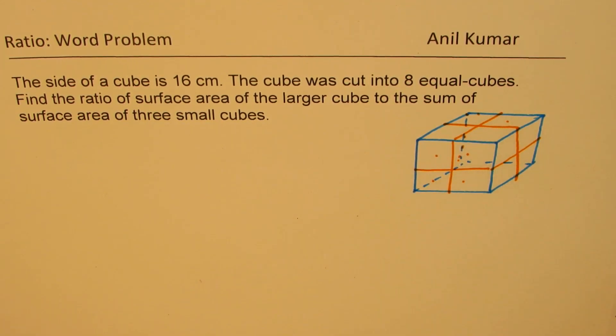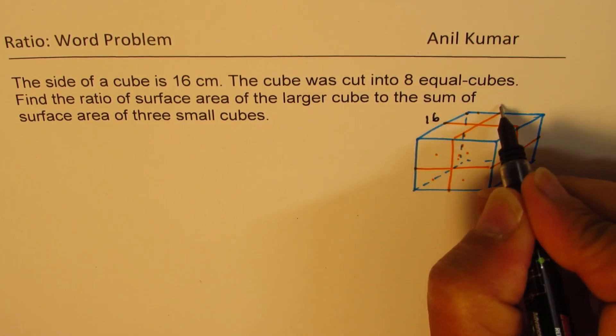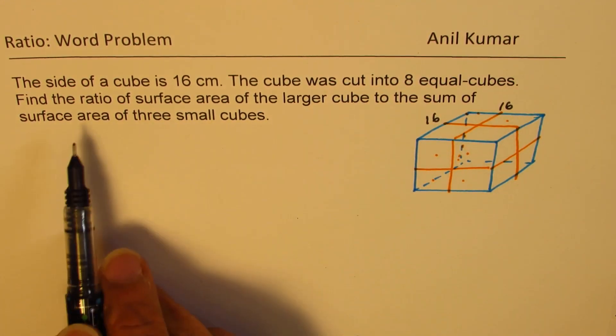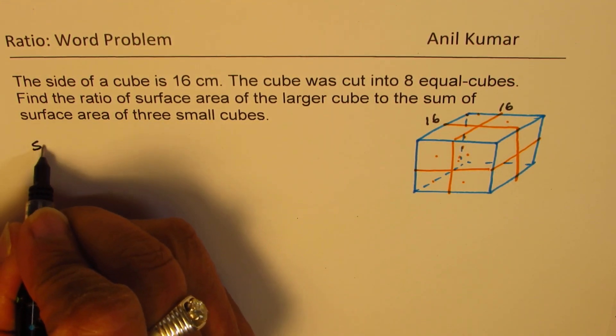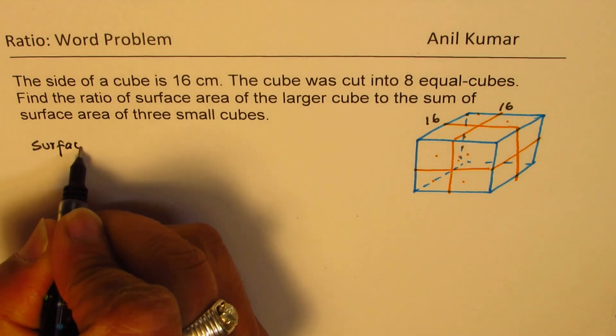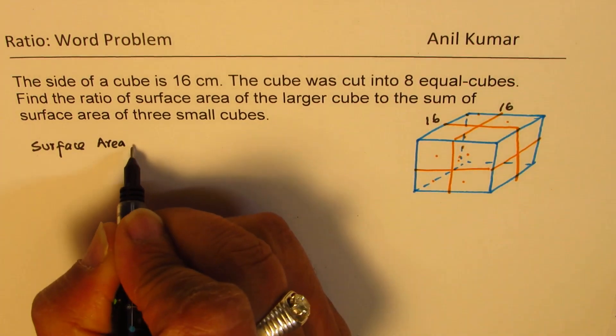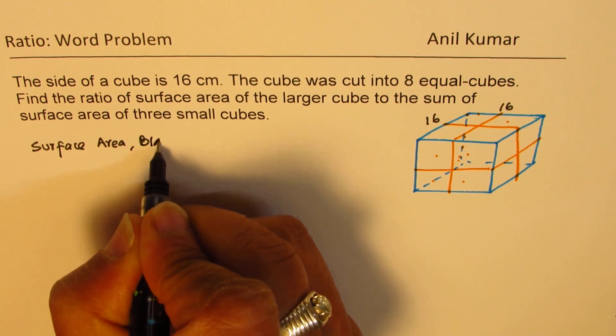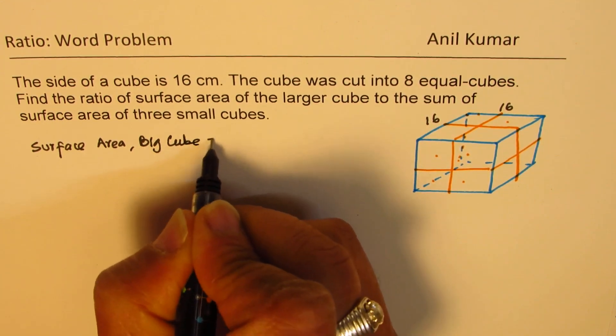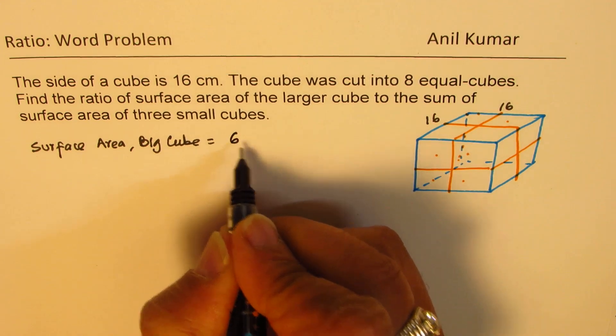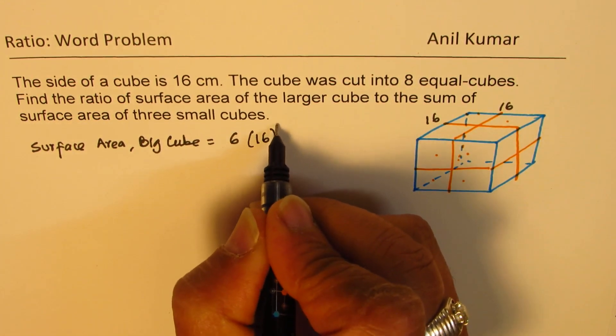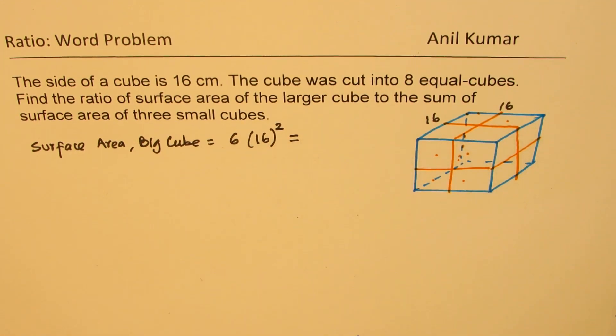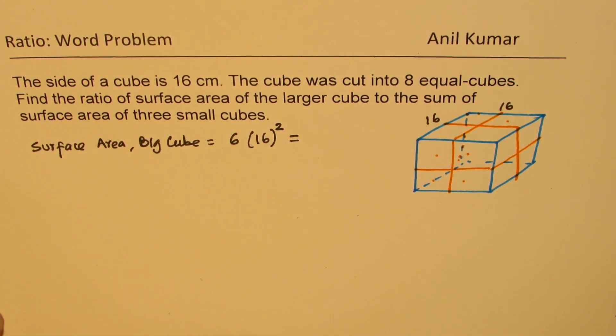What we are given here is that the big cube has dimensions which is 16, right? So this is 16 centimeters. We need to compare the surface area. So what is the surface area for big cube? Surface area, there are six faces, so six times. Each is 16 centimeters, 16 squared. So that is your surface area.